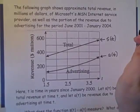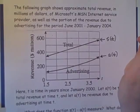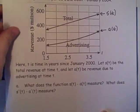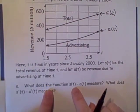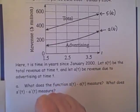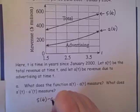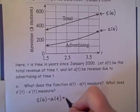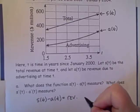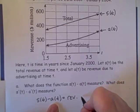So in part a, they ask us to state what the function s(t) minus a(t) measures. Well, s(t) minus a(t) equals the revenue from sources other than advertising.